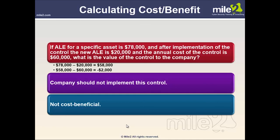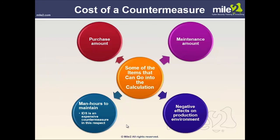Some companies will implement controls regardless, but this is how we calculate cost-benefit. Items that go into the cost of a countermeasure include the purchase amount, maintenance amount, negative effects on production environments such as downtime, and man-hours to maintain. An IDS, for example, can be an expensive countermeasure, and all these factors need to be considered when evaluating the total cost.